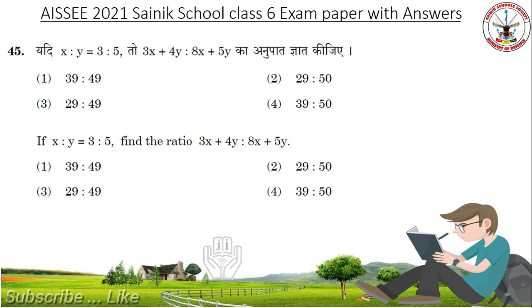If X is to Y equal to 3 is to 5, find the ratio 3X plus 4Y is to 8X plus 5Y. Answer is 29 is to 49.